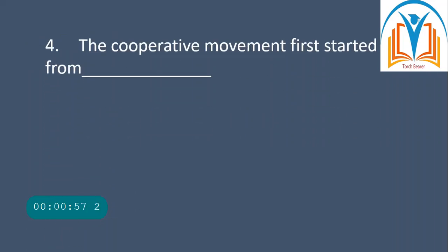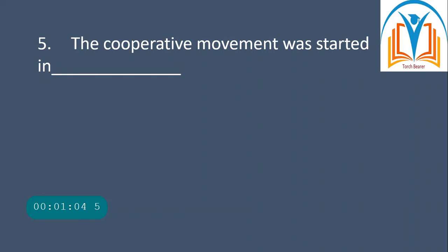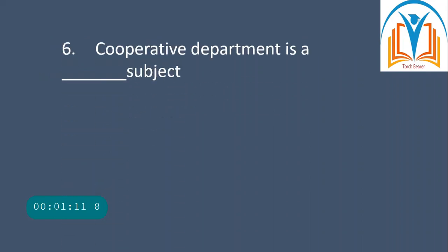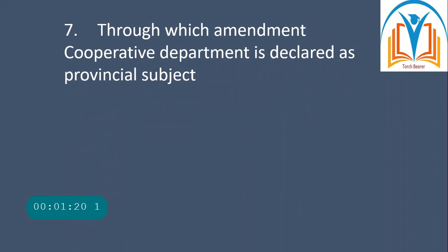Question number four: the cooperative movement first started from England. Question number five: the cooperative movement was started in the 19th century. Question number six: cooperative department is a provincial subject.